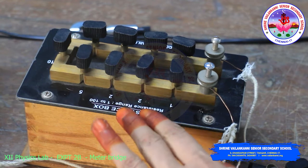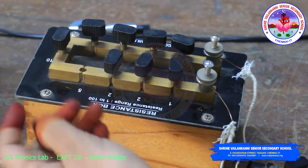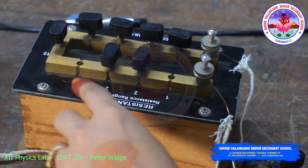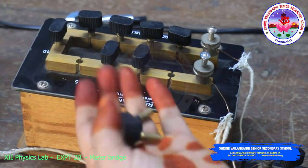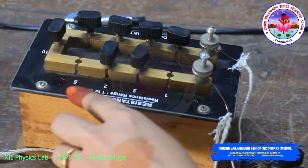We will take out 6 ohms from the resistance box. For that we will remove 5 and 1, the two keys I have removed. So we will get 6 ohms.